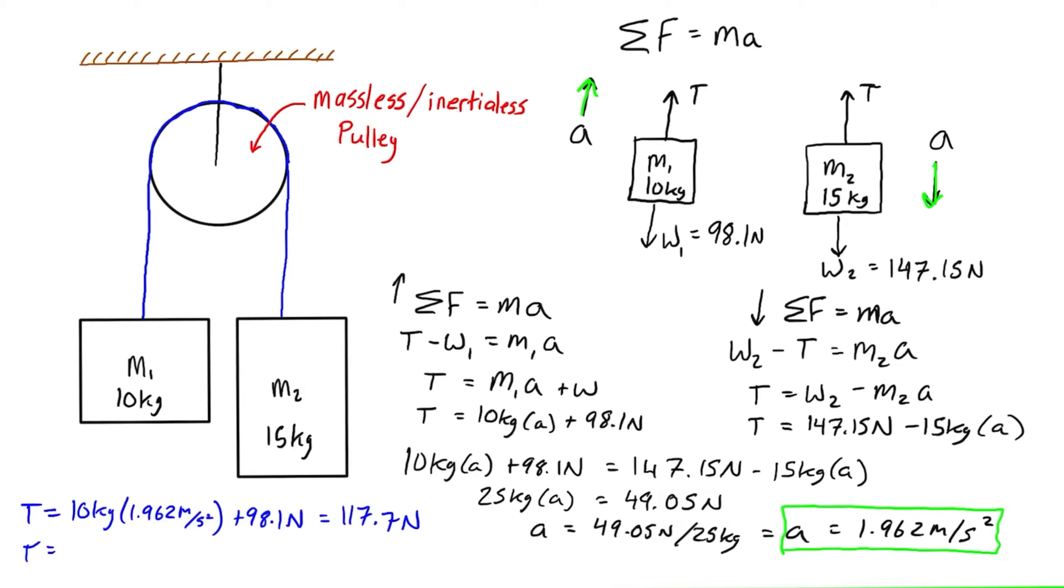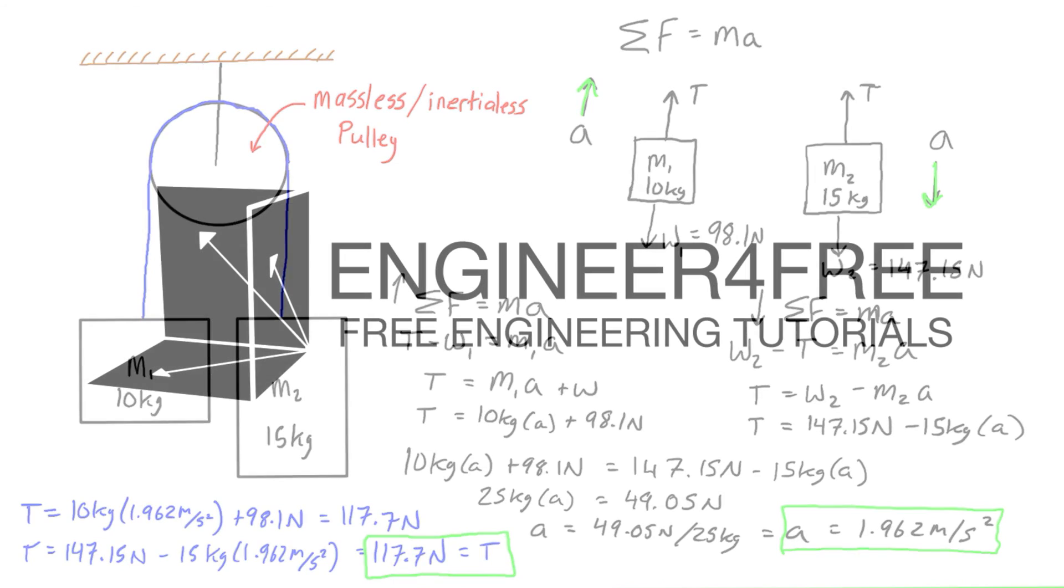When you simplify that, the tension equals 117.7 newtons. We can cross-check with the other equation: T equals 147.15 newtons minus 15 kilograms times 1.962 meters per second squared, which also gives us 117.7 newtons. We can put a nice big box around that as our solution.